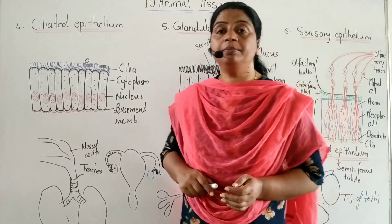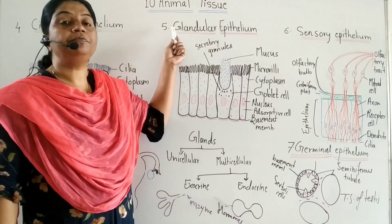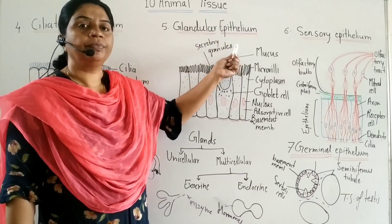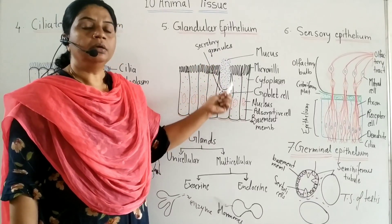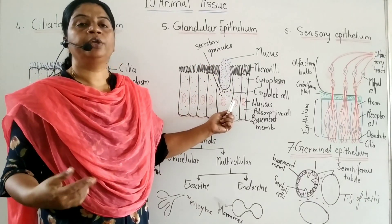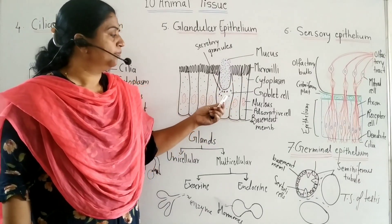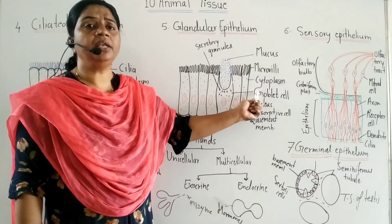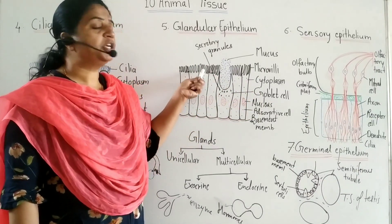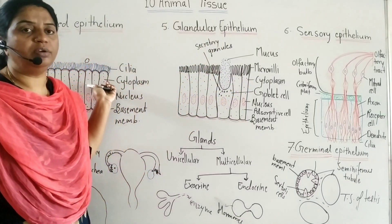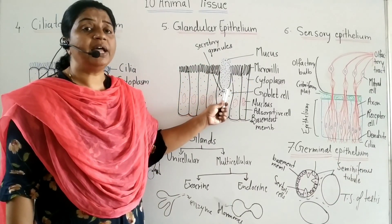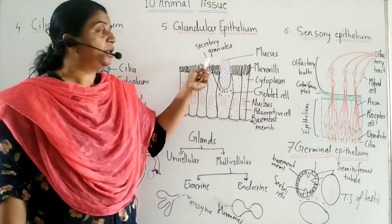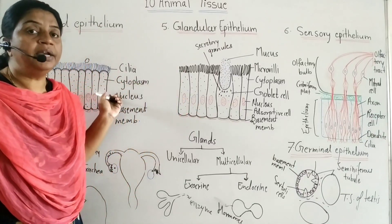The fifth type of simple epithelium is glandular epithelium. Glandular epithelium may be columnar, cuboidal, or pyramidal in shape. It is scattered into the columnar epithelium — that is, brush border columnar epithelium or ciliated columnar epithelium. Single cells of glandular epithelium are called goblet cells, which are scattered into the brush border columnar epithelium or ciliated epithelium.